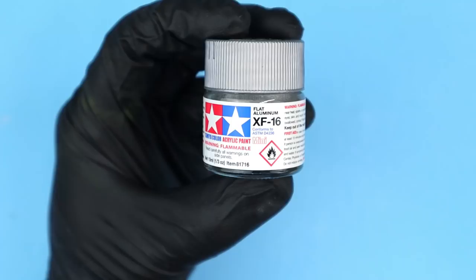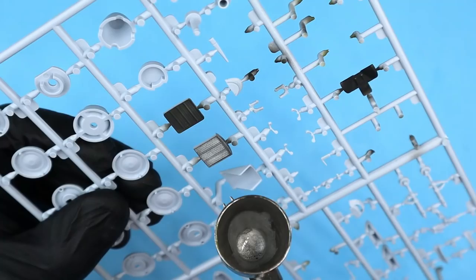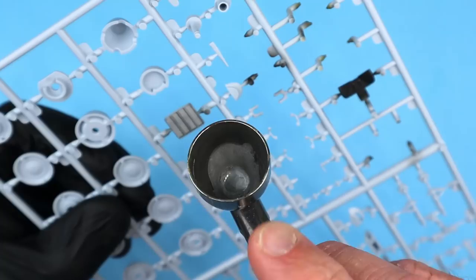While the decals set up and before I could install everything into the fuselage halves I had to paint and install the radiator assembly. I used Tamiya flat aluminum to paint the radiator screens and while I had that color loaded up I also used it to paint the landing gear and wheel parts.